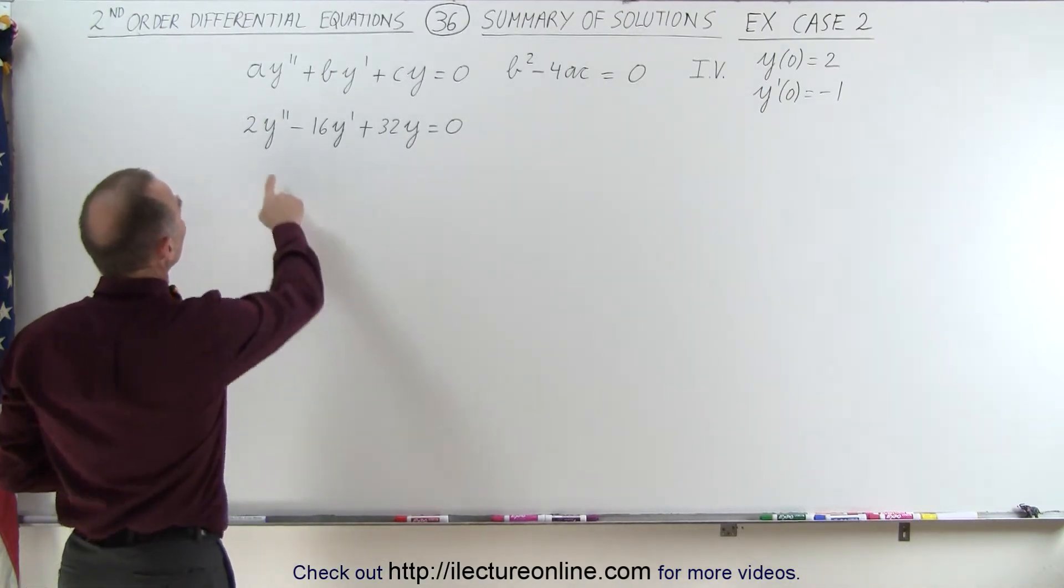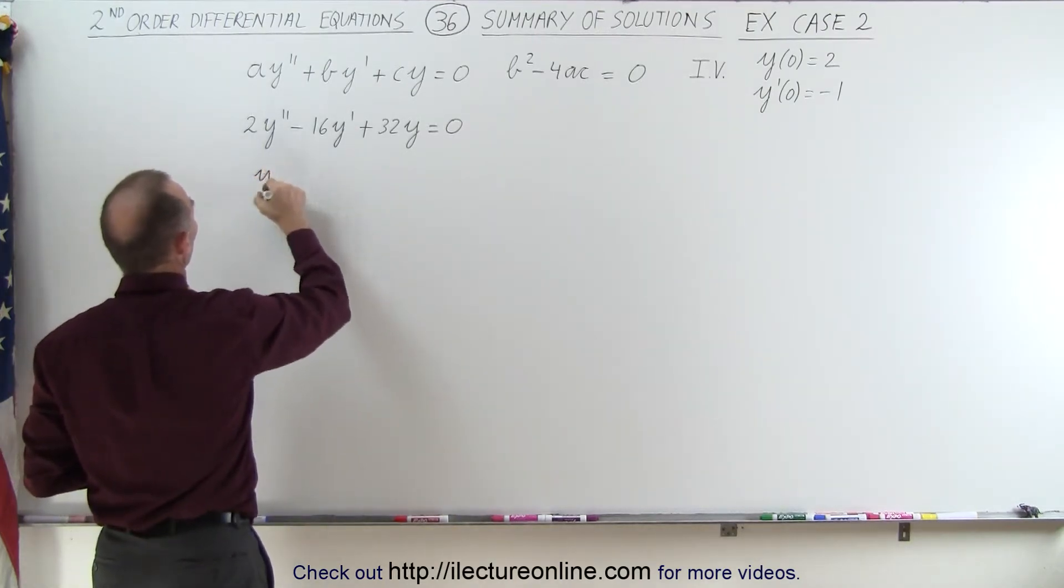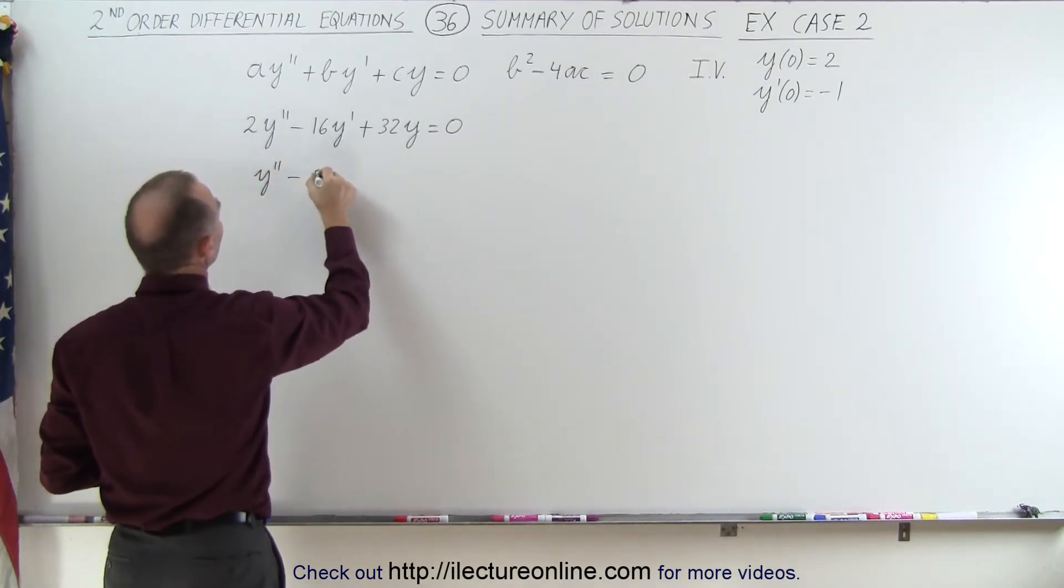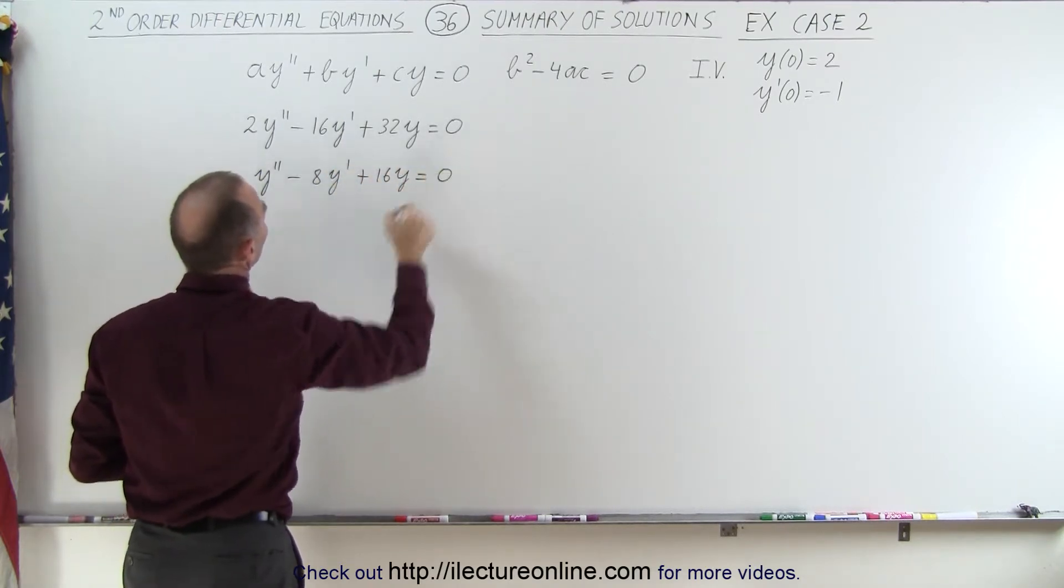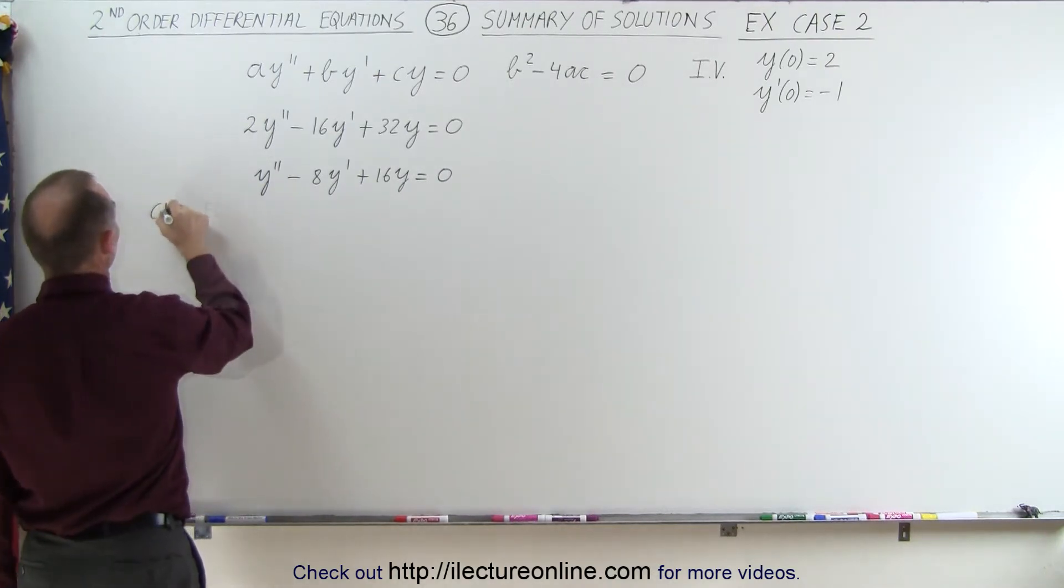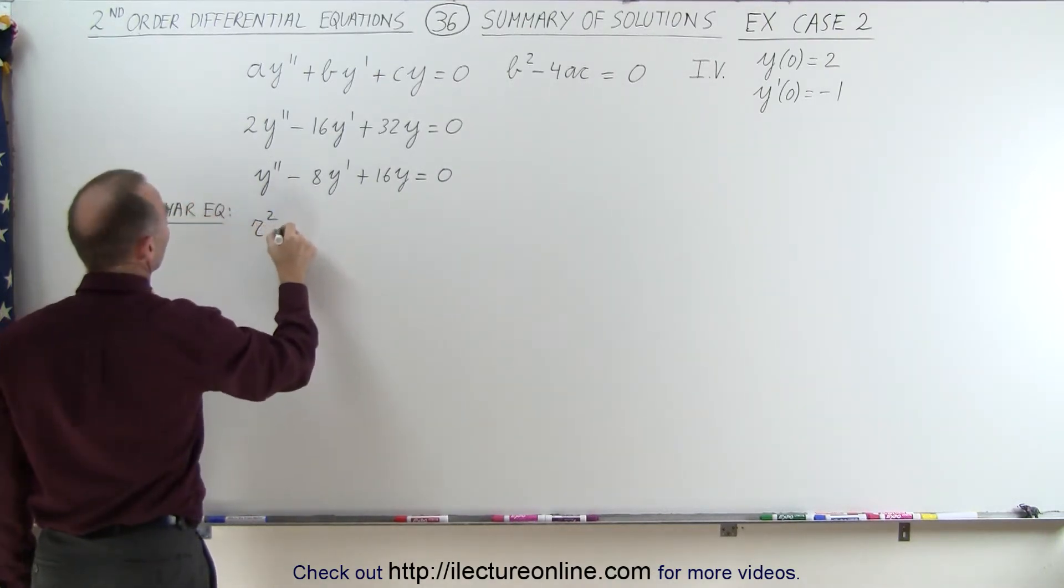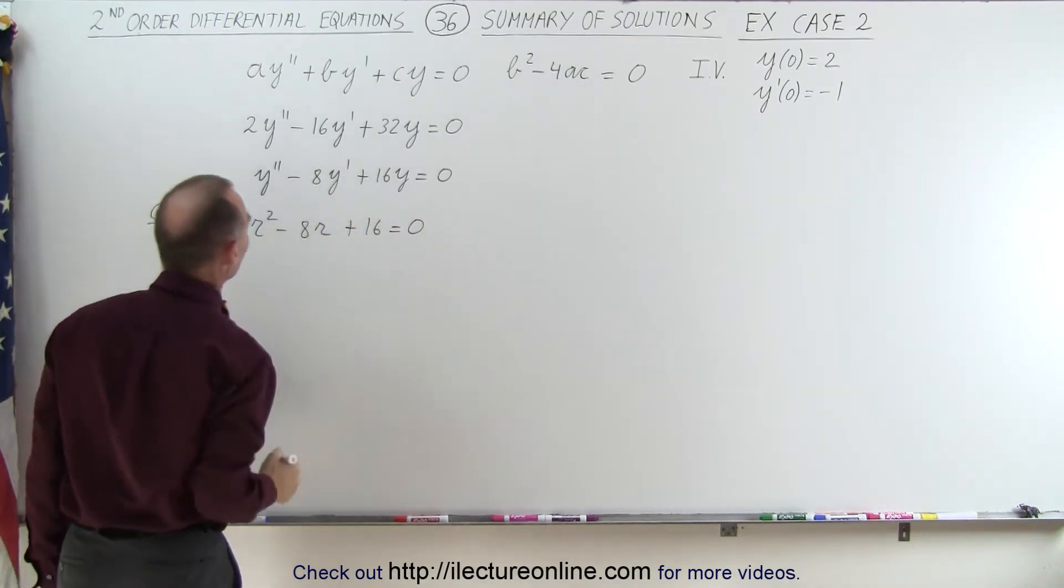Well, first we're going to divide everything by two, which makes it a little bit easier. So we have y double prime minus 8y prime plus 16y is equal to zero. The characteristic equation will look as follows: r squared minus 8r plus 16 is equal to zero.